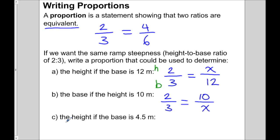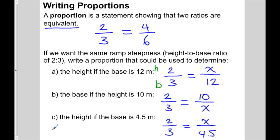Let's do the last one — write a proportion to determine the height if the base is 4.5. I start with the given ratio and make it equal to another ratio. The base is 4.5, so it goes on the bottom. The height is unknown. This is how we write proportions, and I want to emphasize that the order matters — the base number always has to be on the bottom and the height on top. Sometimes the variable is in the numerator and sometimes in the denominator, depending on the situation.